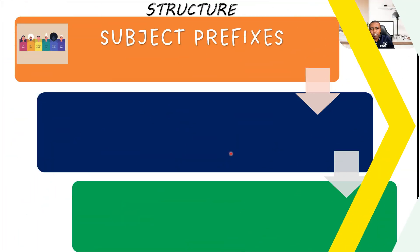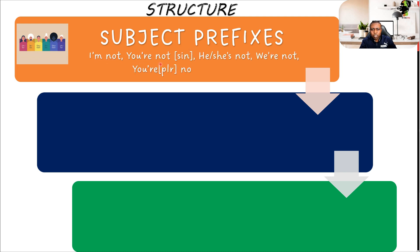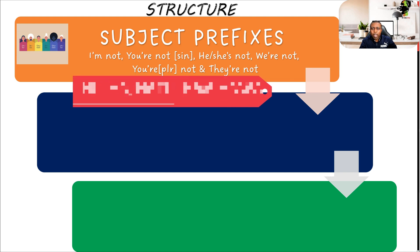The first thing we'll be looking at are our negative subject prefixes. We are looking at: I am not, you are not (singular), he or she is not, we are not, you plural are not, you all are not, and they are not. Remember from the previous lesson where we learnt the subject prefixes: who, ha, hatu — those are the ones we'll be looking at.